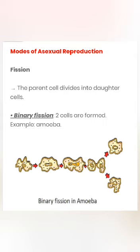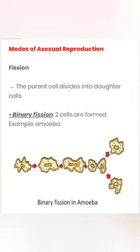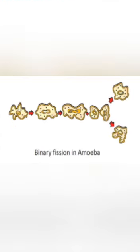First, let us discuss about fission. It is a type of reproduction where the parent cell divides into two or more daughter cells. For example, binary fission — two cells are formed from the parent cell. Bi means two and fission means division. This is seen in amoeba. In amoeba, first the nucleus elongates along with the appearance of constriction in the cytoplasm and division of cytoplasm, which eventually leads to the formation of two daughter cells, as you can see in the picture.